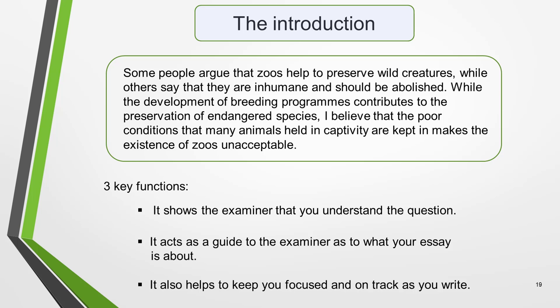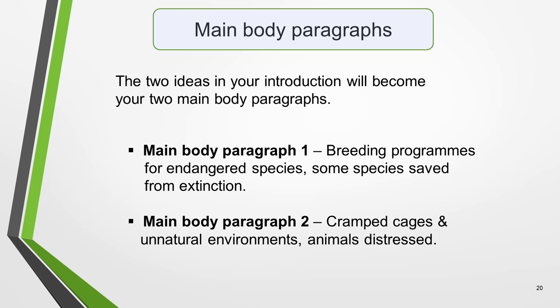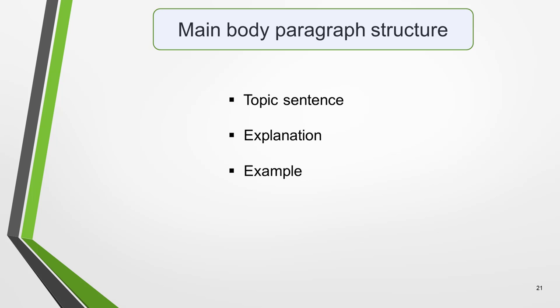This introduction achieves three important functions: it shows the examiner you understand the question, it acts as a guide to what your essay is about, and it helps keep you focused as you write. The two ideas in your introduction will become your two main body paragraphs. Main body paragraph 1 will cover breeding programs for endangered species, with some species saved from extinction. Main body paragraph 2 will be about cramped cages, unnatural environments and distressed animals. Main body paragraphs should contain three things: a topic sentence, an explanation, and an example.